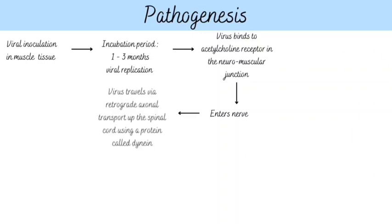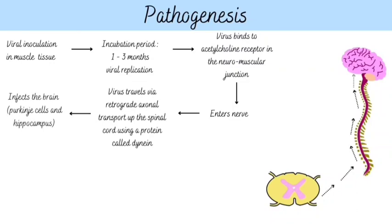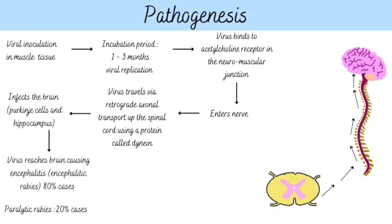The virus then replicates in the spinal cord, from where it infects the brain, affecting mainly Purkinje cells and the hippocampus, causing encephalitis. This leads to coma and death, respiratory arrest, and convulsions.